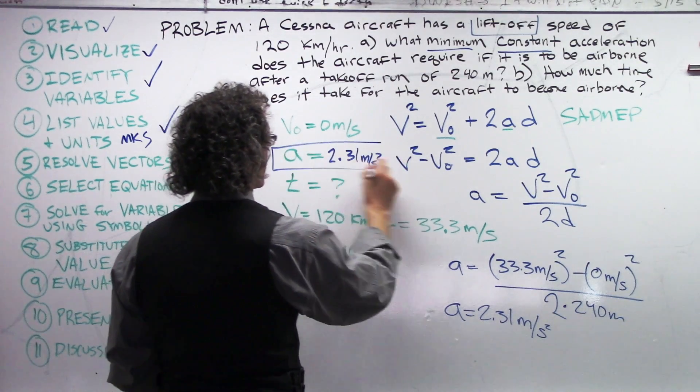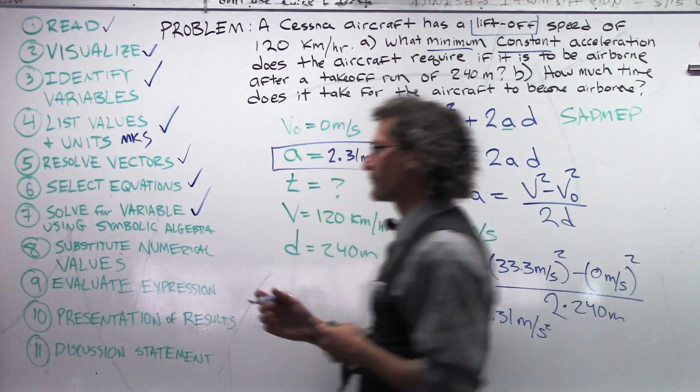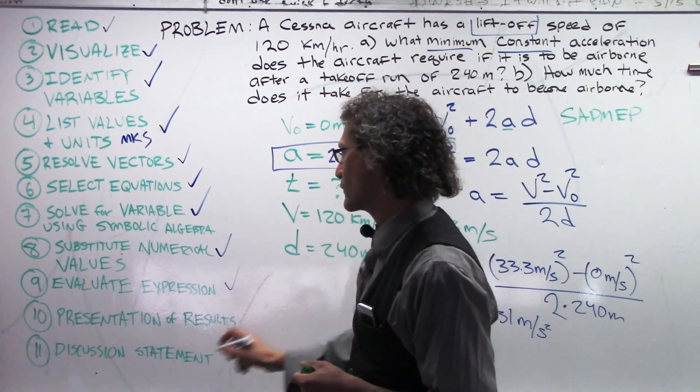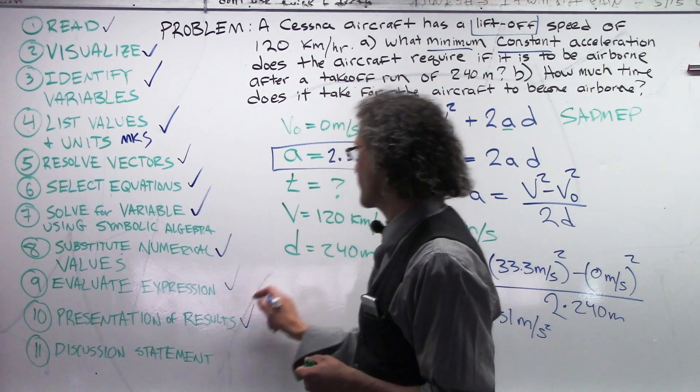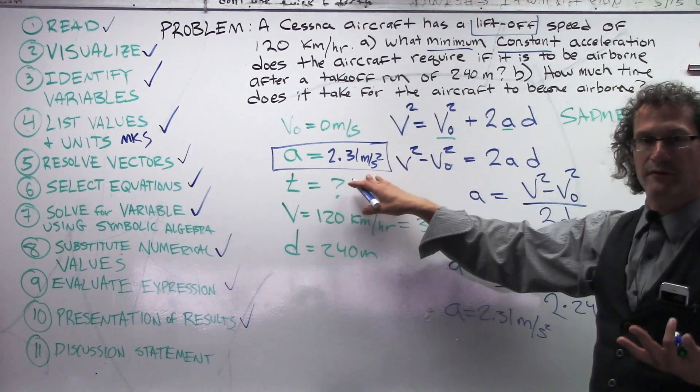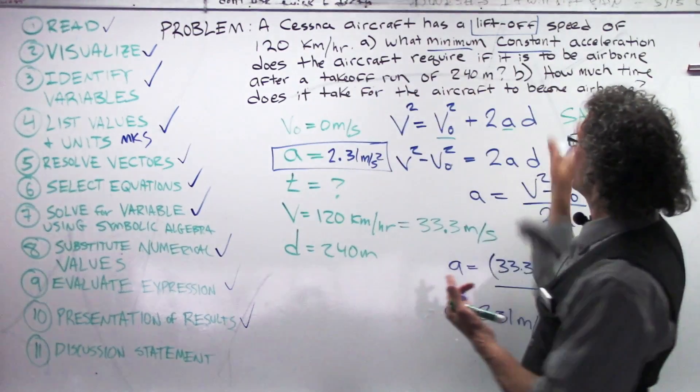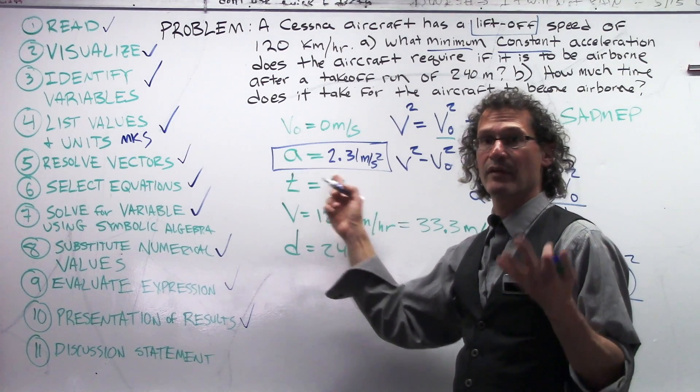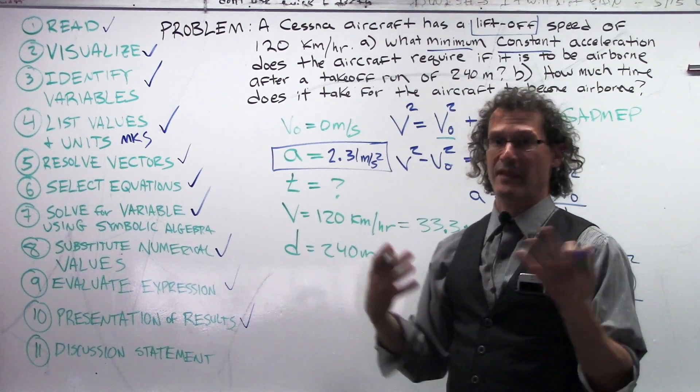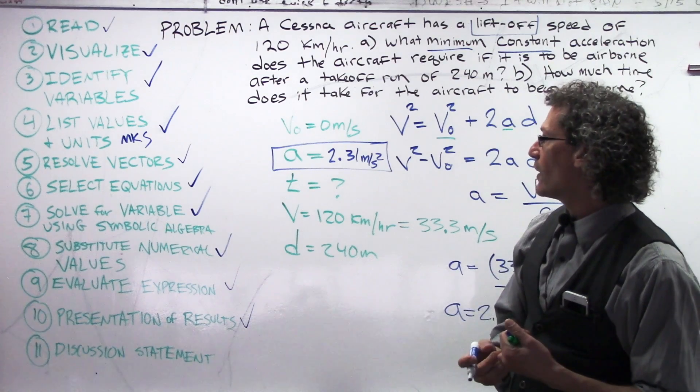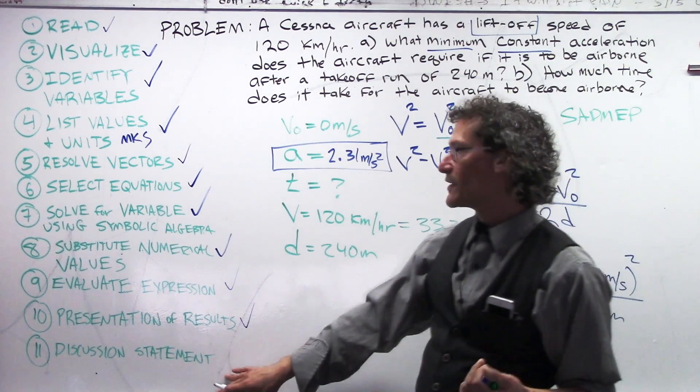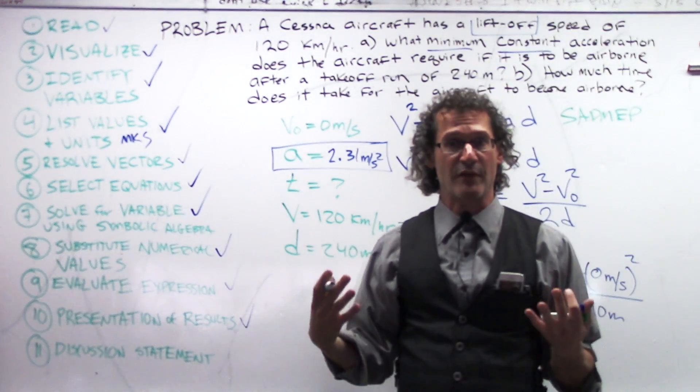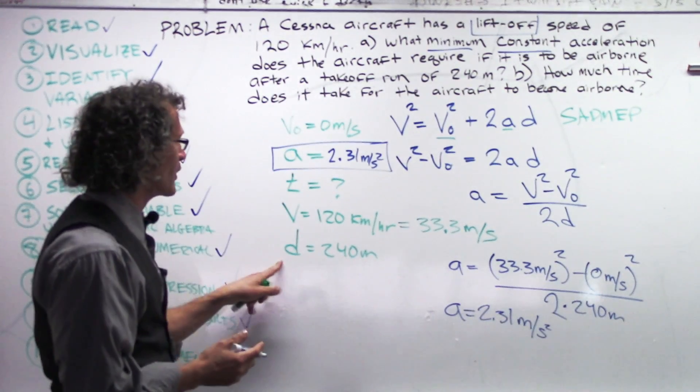Since we have the answer as 2.31 meters per second squared. I'm going to box that, for now, here. Because that, after our substitution, we've evaluated the expression, we have the presentation of results. We want to very neatly identify that this is our answer. And, it's pretty obvious when you look here. There you go. Lift off this box. But, this is a variable with a value and units. That's what we want. I'm going to write the discussion statement. But, I'm going to save that because we also have a part B. And, I would write them together. I would rather write them together.